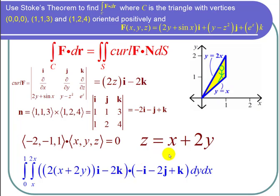And then we take negative g sub x. That's negative i. And then negative g sub y. So we have minus 2j. Then plus k. And we always have dy dx because we're integrating with respect to y first and then x.